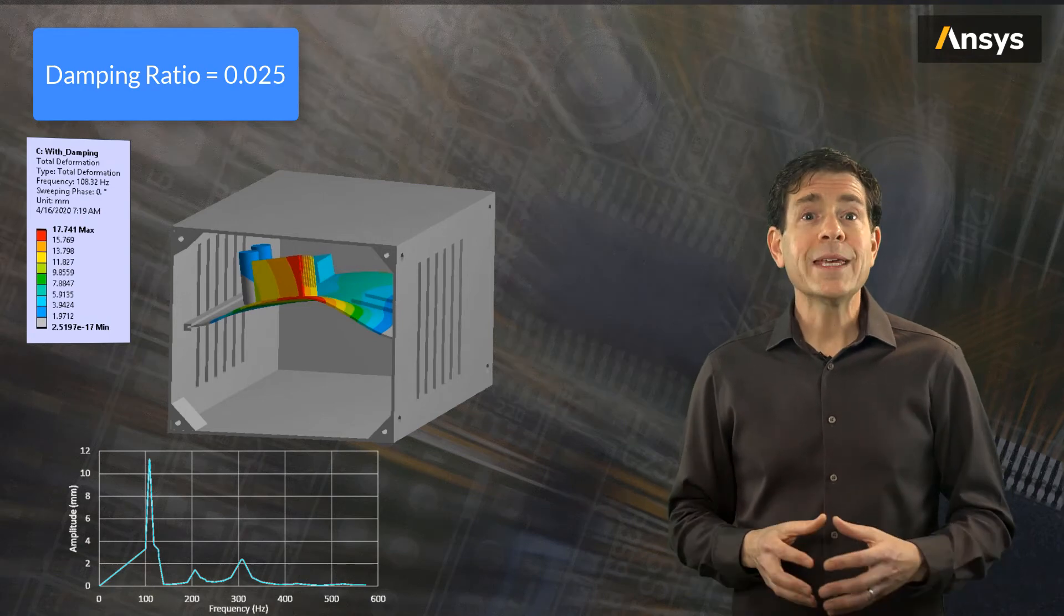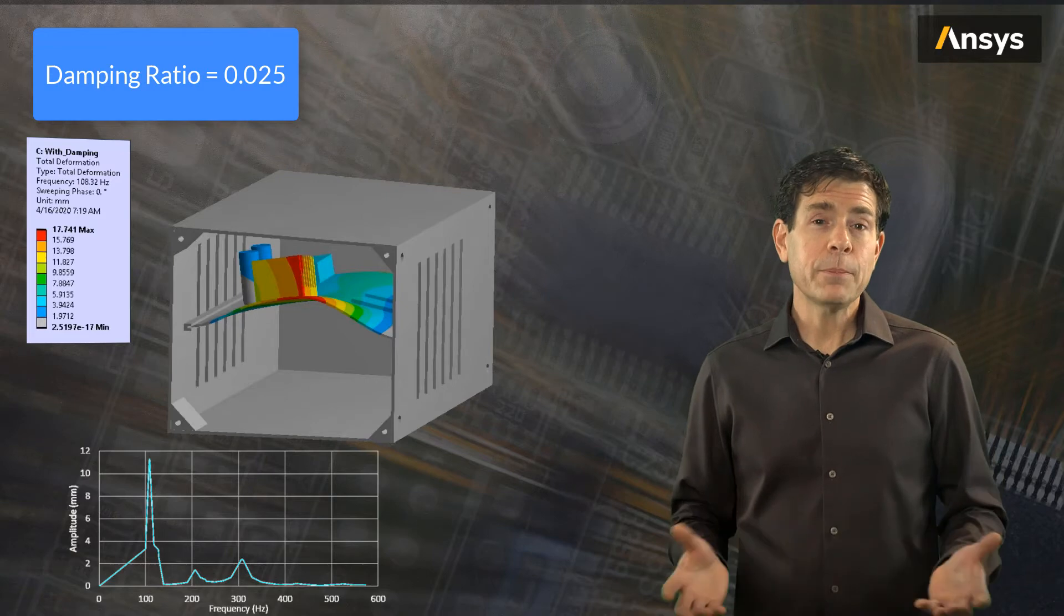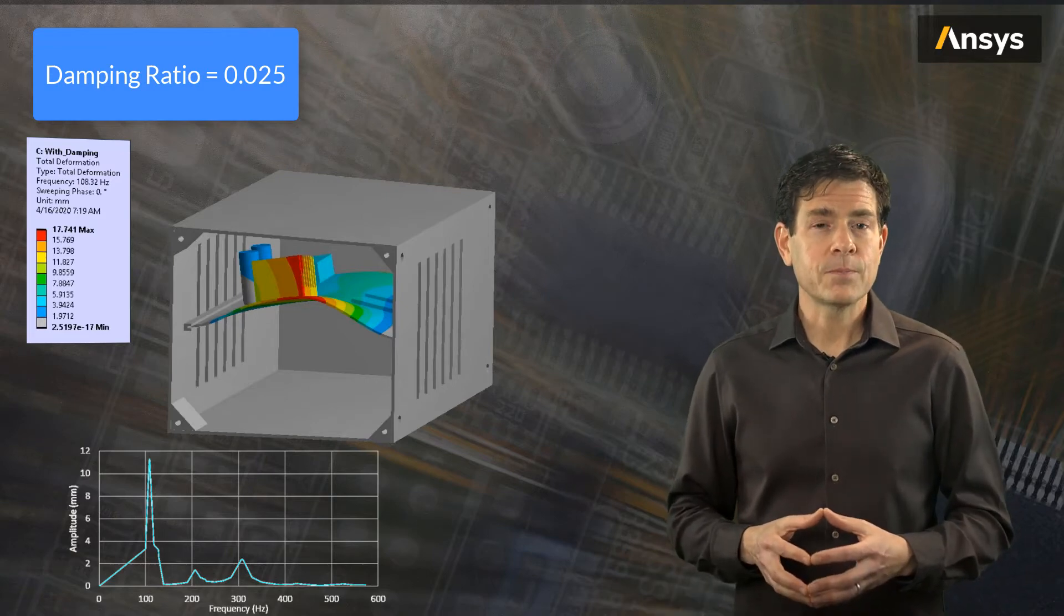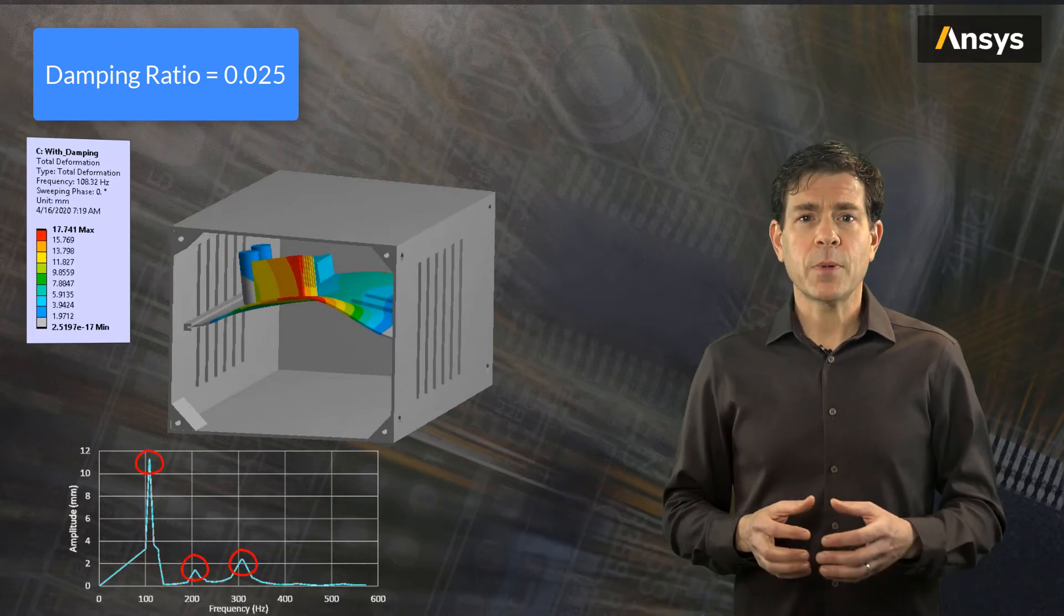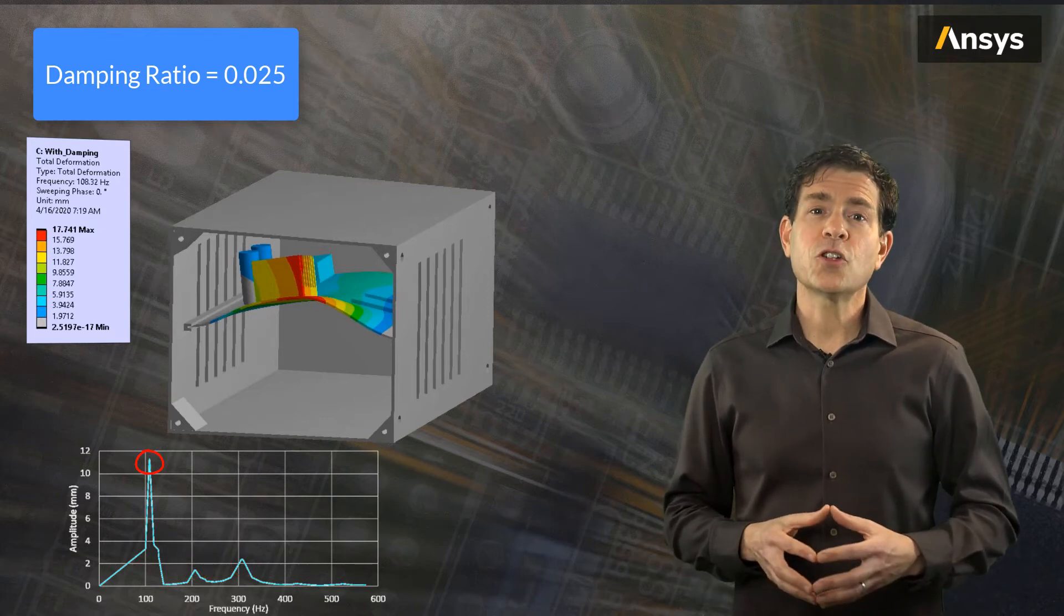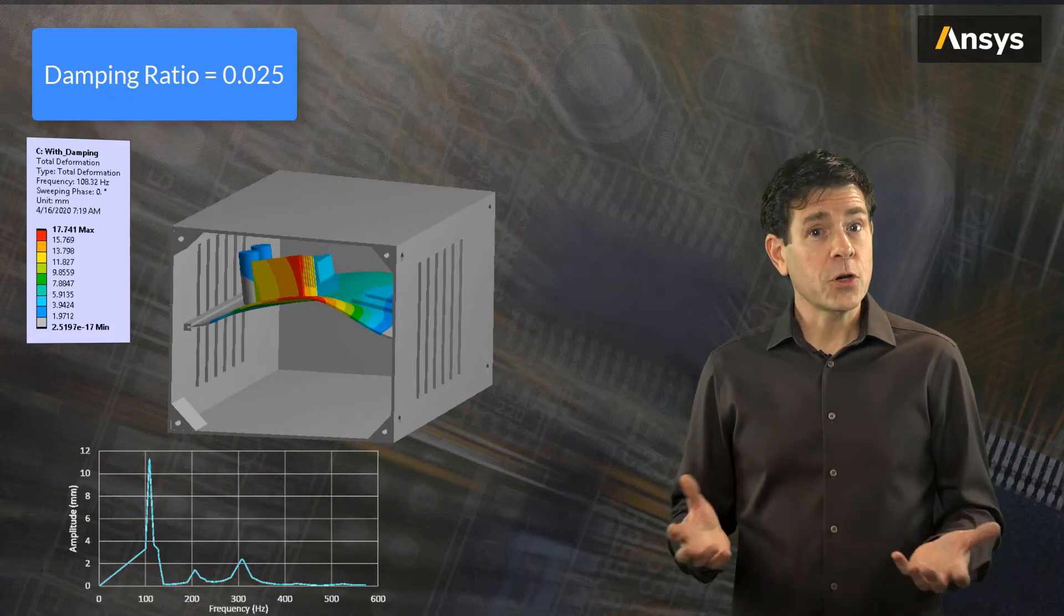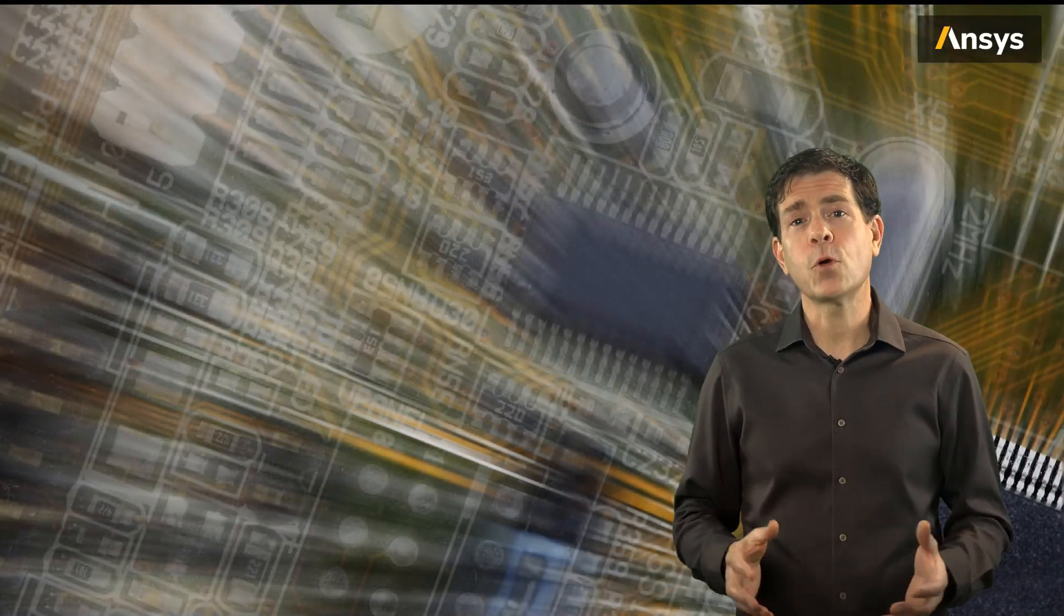But we can also see that damping is preventing excessive deformation compared to the zero damping case. These peaks in our frequency response plot correspond with the natural frequencies of our system. In this case, that large peak occurs at 108 Hz or 108 cycles per second. So harmonic analysis or sine-sweep shaker table testing is often performed physically on structures to determine and verify the damping characteristics as well as the natural frequencies of the structure.